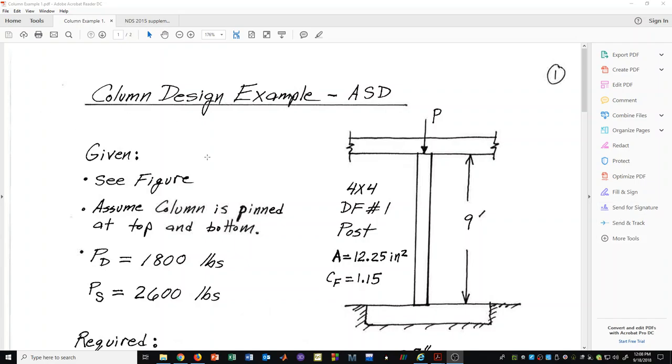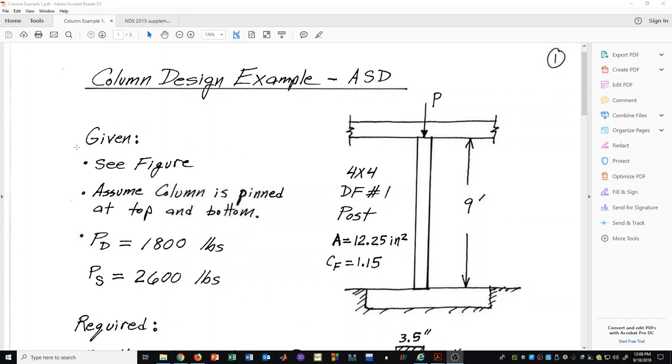In this video we will do a column design example according to the allowable stress design procedure. We have some given information and we need to see this figure on the right hand side.